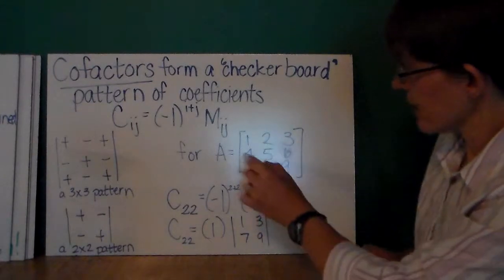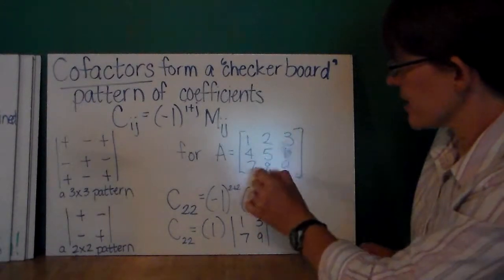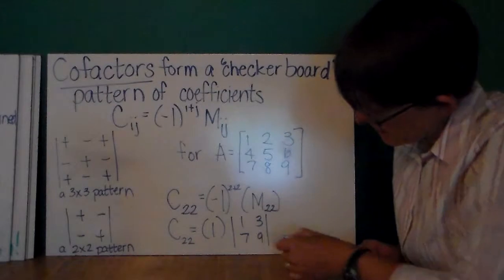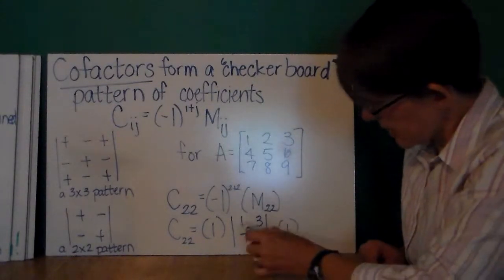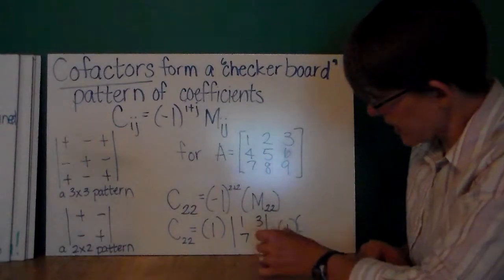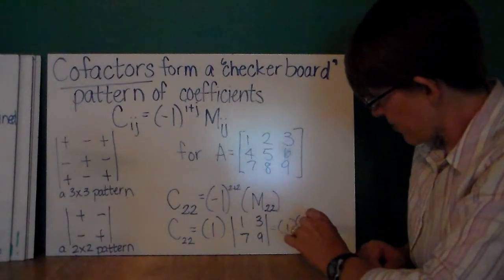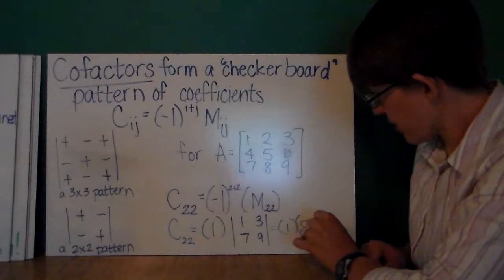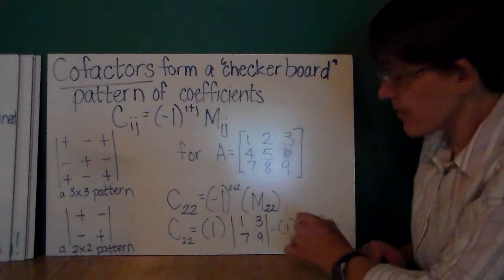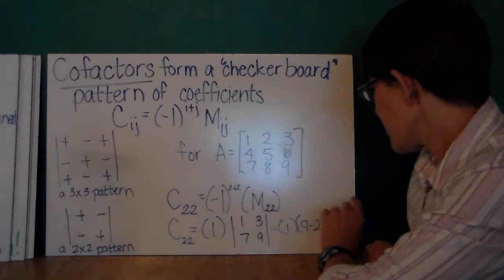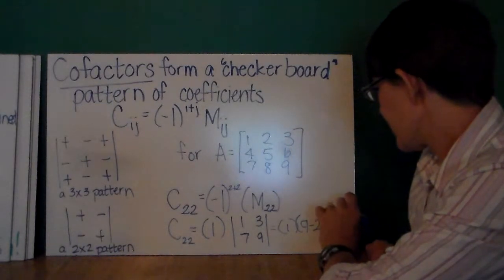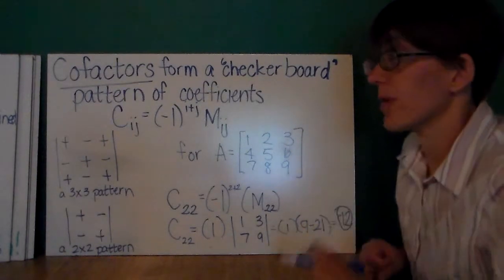So, finding that minor, cross out, cross out, I get 1, 3, 7, 9. And here it is. So, I'll have 1 times the difference 9 minus 7 times 3 is 21. Okay, so, 9 minus 21, that is negative 12 times 1 gives me negative 12. So, here's the cofactors.